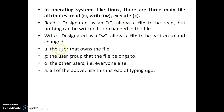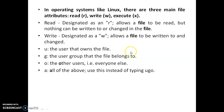Now let's look at the types of users. There are four types: U, G, O, and A. U stands for the user who owns the file. G stands for the group to which that user belongs — the group the file belongs to. O stands for other users — everyone else apart from that user. And A means all — U, G, and O together. These are the four different types of users.